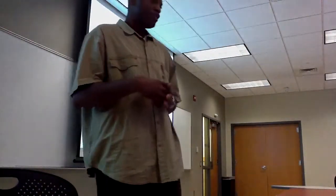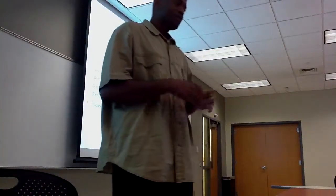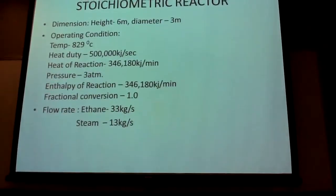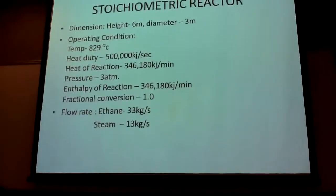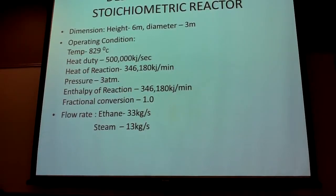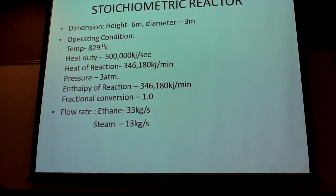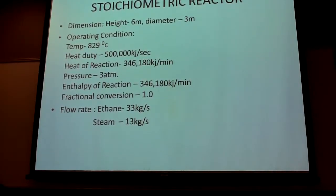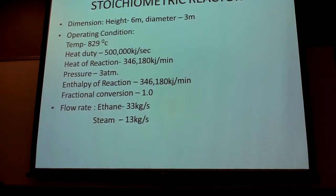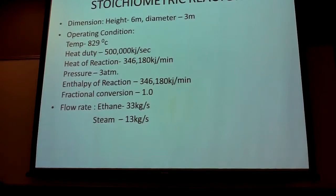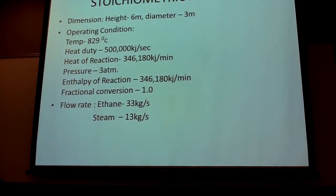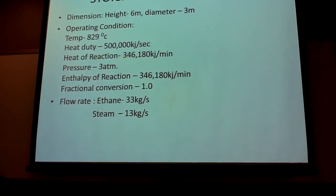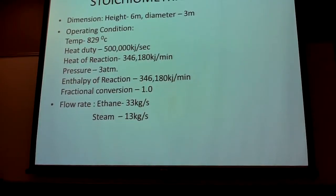We designed a stoichiometric reactor, which is specifically the one we decided to focus on. It has a height of about 6 meters and a diameter of about 3 meters. The operating conditions are a temperature of about 829 degrees centigrade, a heat duty of about 500,000 kilojoules per second, a heat of reaction of about 346,180 kilojoules per minute, and a pressure of 3 atm.